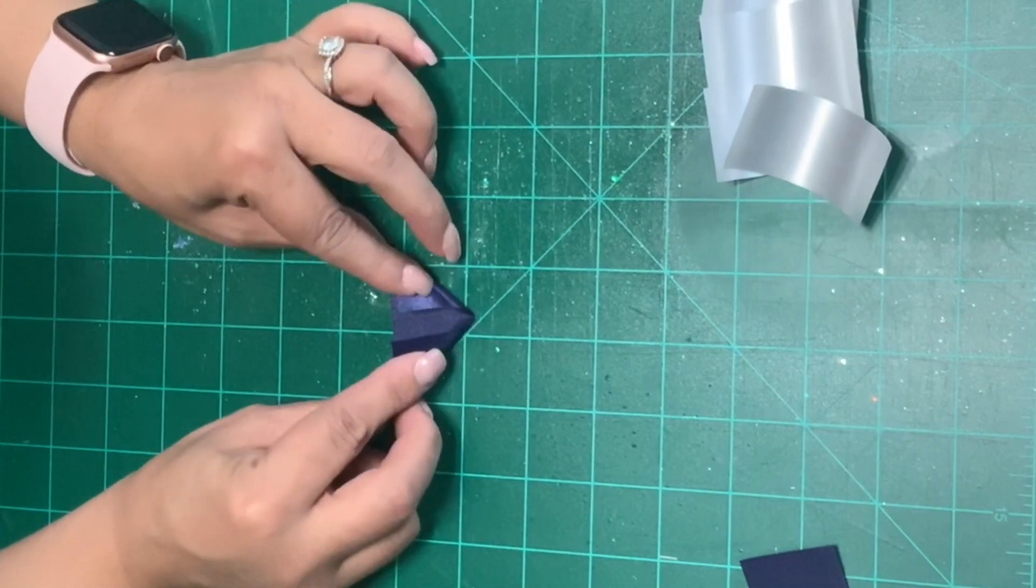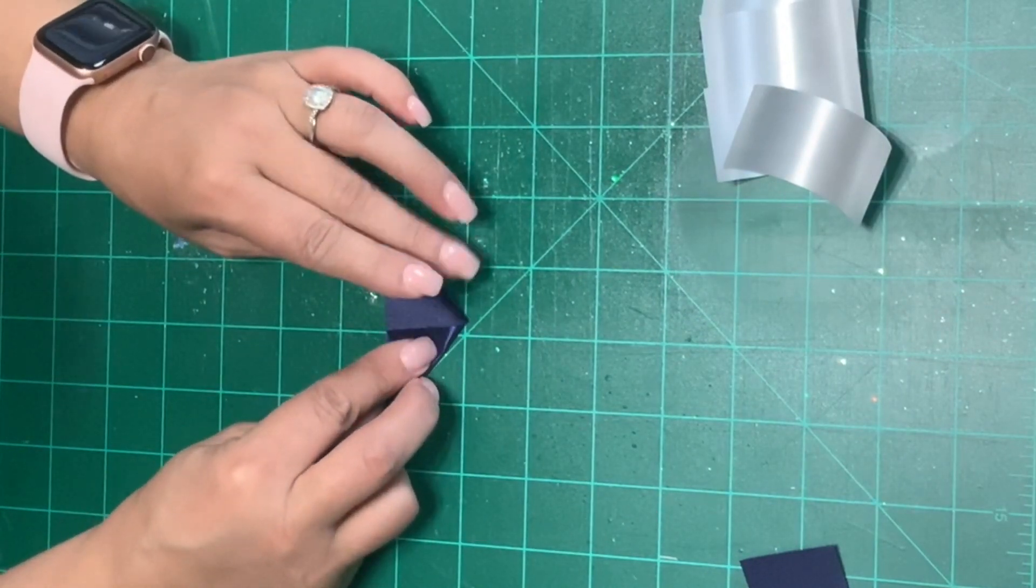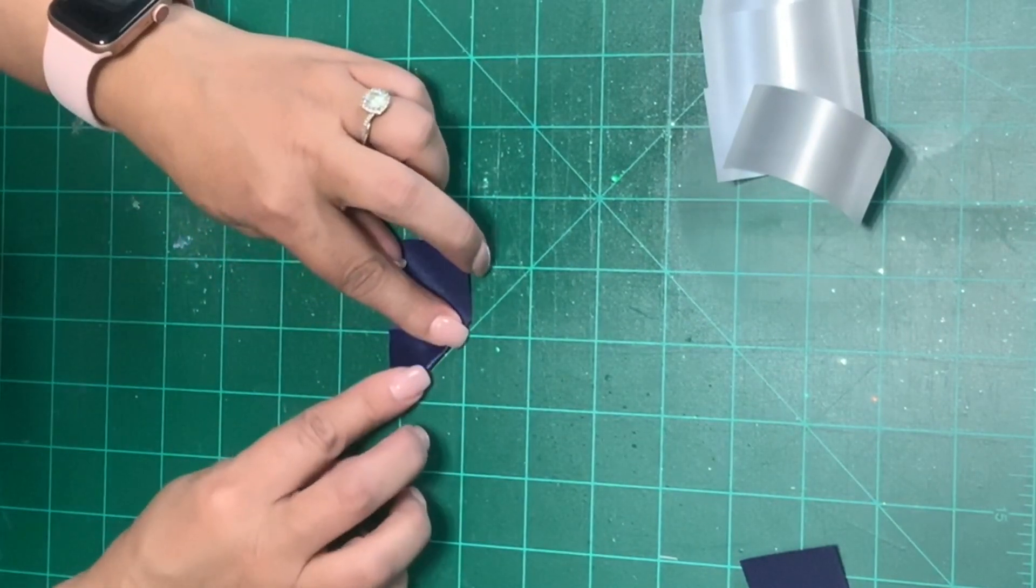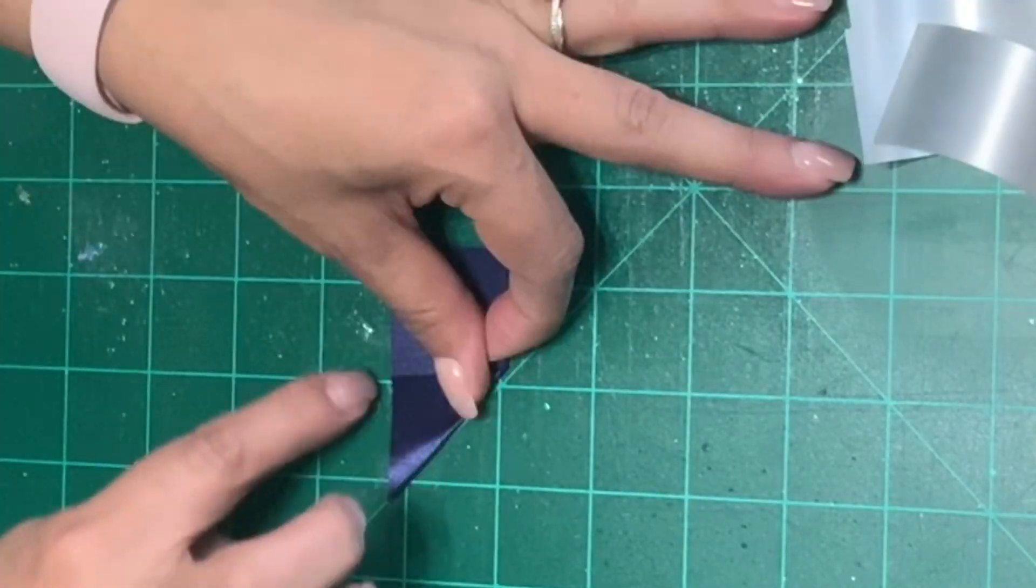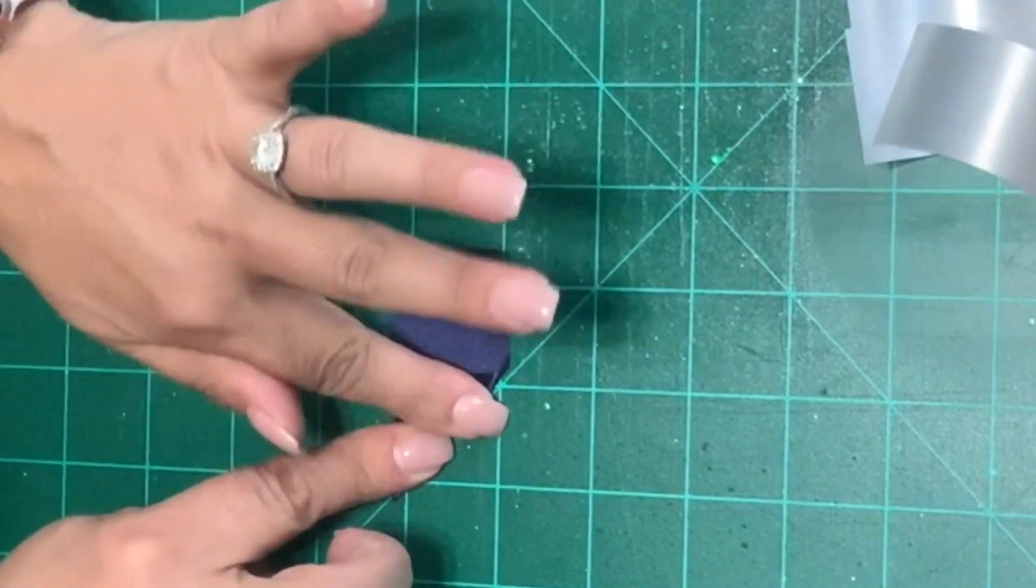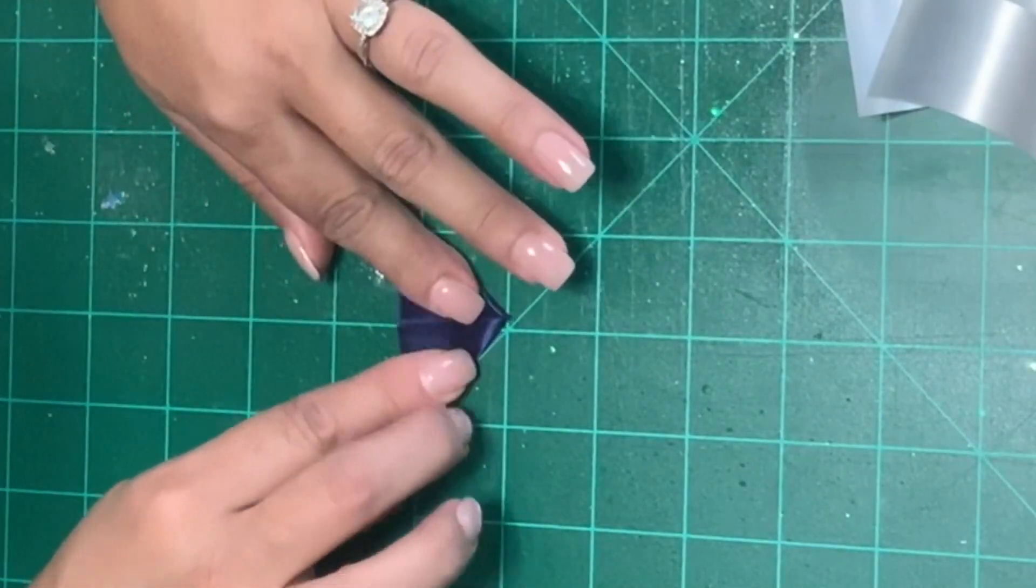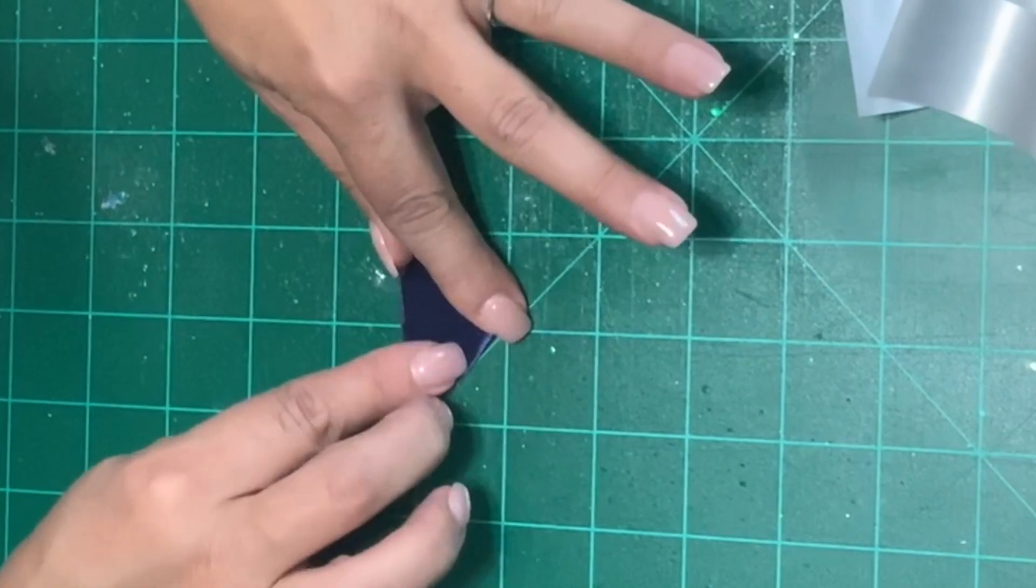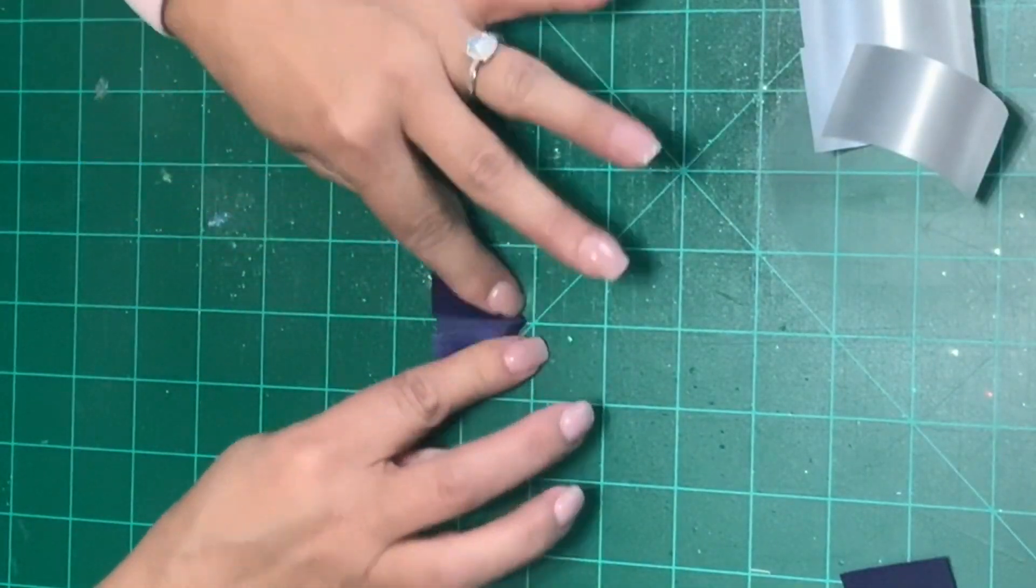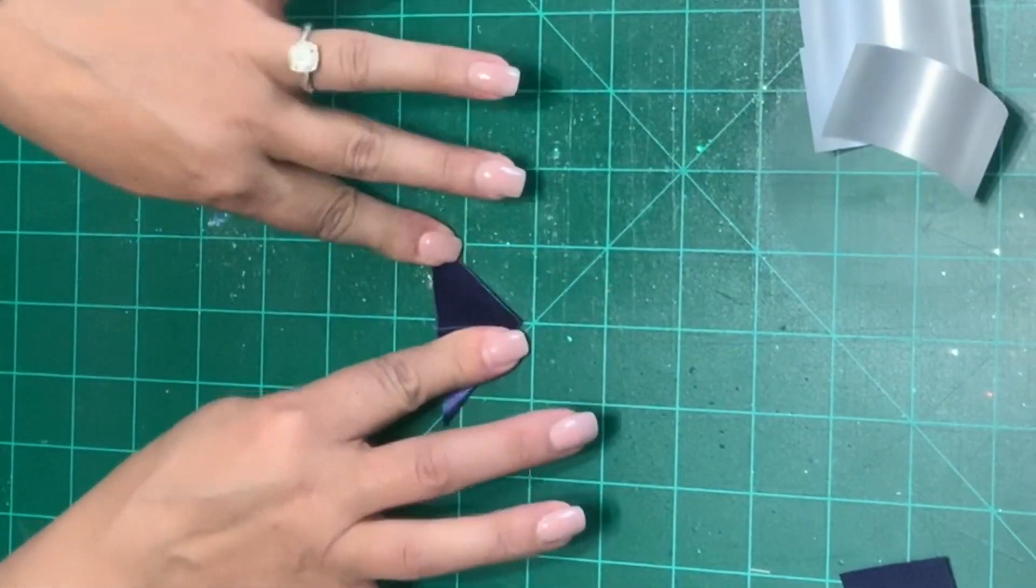Take a strip and fold both sides in so they make a triangle. You can start with one side. Now make sure that it lines up with the bottom perfectly. Then you want to take your other side and fold it down as well so that everything lines up. Then press down to make a crease. If the bottom isn't straight you can trim it a little bit to fix.